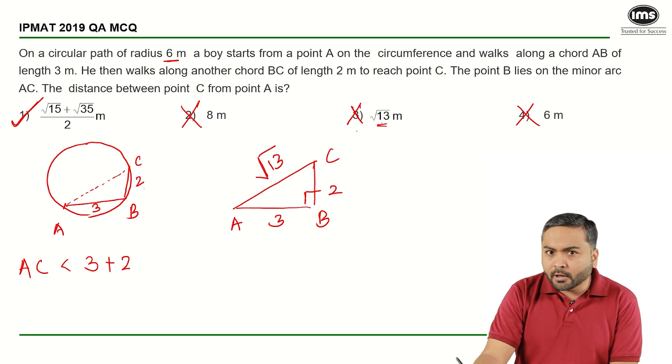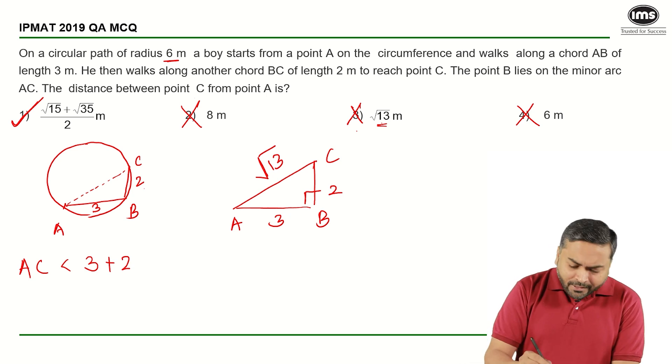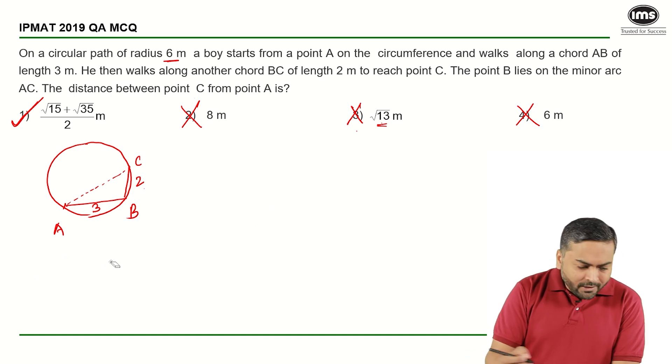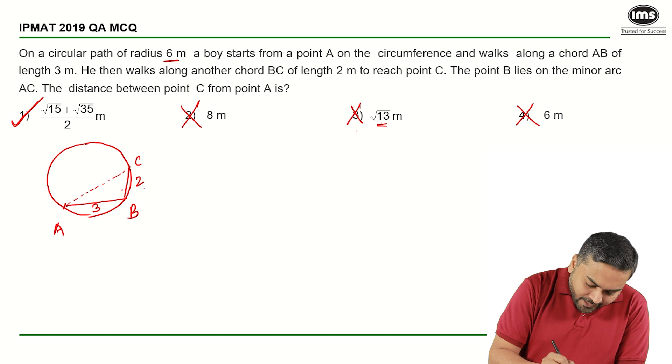This is how we could have actually solved this particular question without wasting much time. Now let's see how can we actually solve this question using trigonometry. So let us assume that this angle is theta. Here we have a center, the radius is 6, this is 6 and this is also radius which is equal to 6. Let's say this is x and this is y.